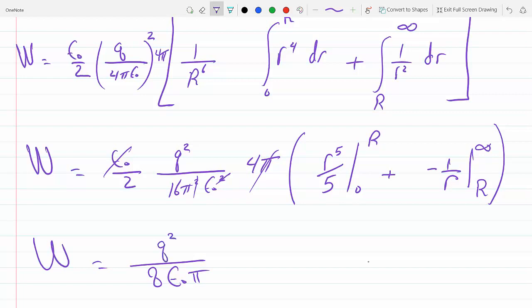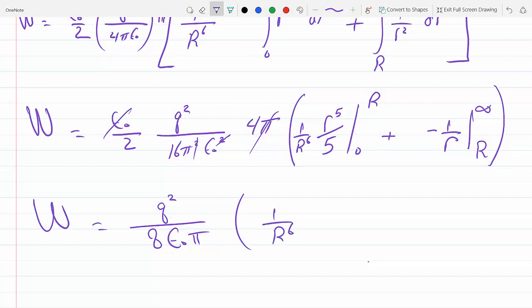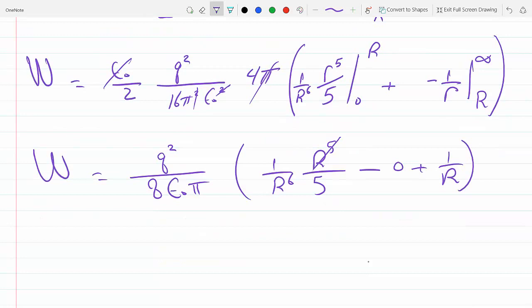Q² now, this becomes—oops, I forgot the 1 over r⁶ here. So this is 1 over r⁶, r⁵ over 5. At infinity this becomes 0 plus 1 over R, so this cancels out.